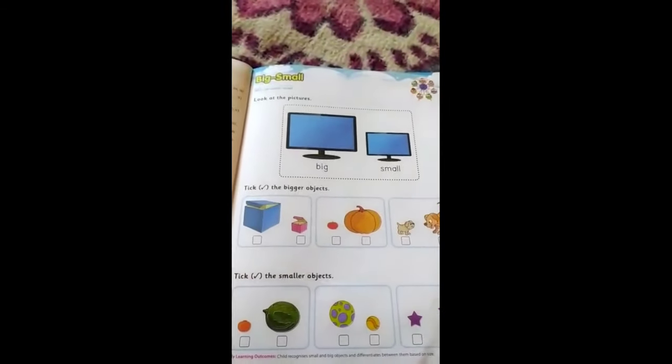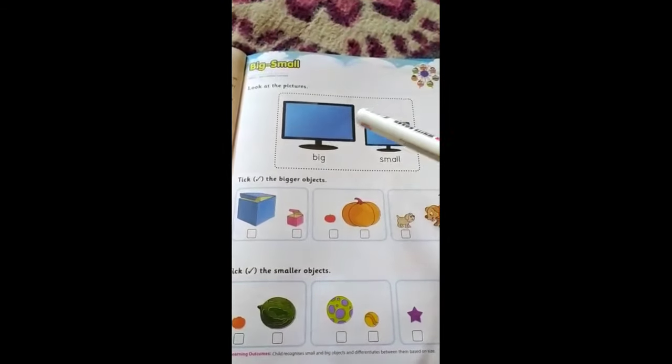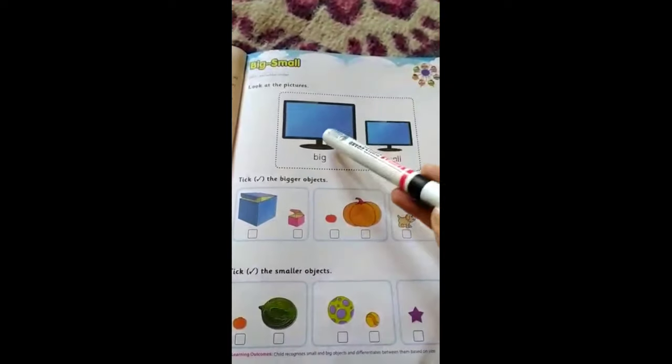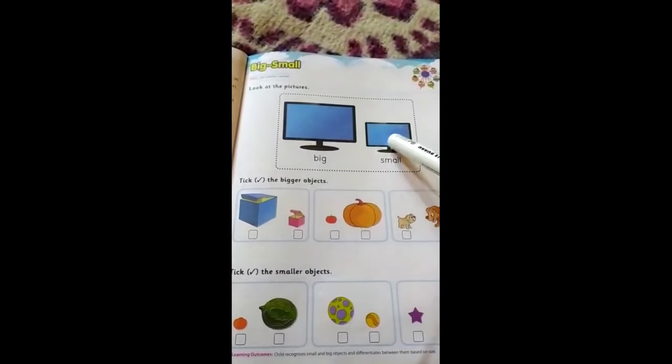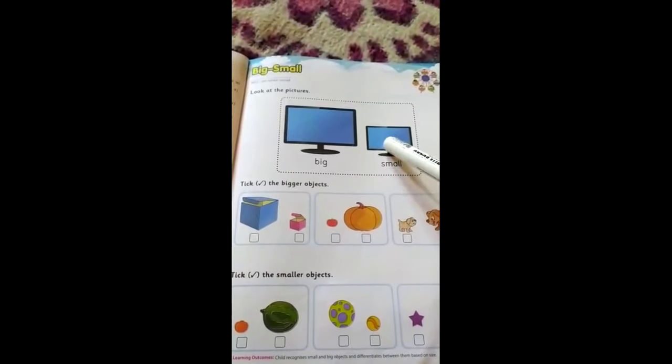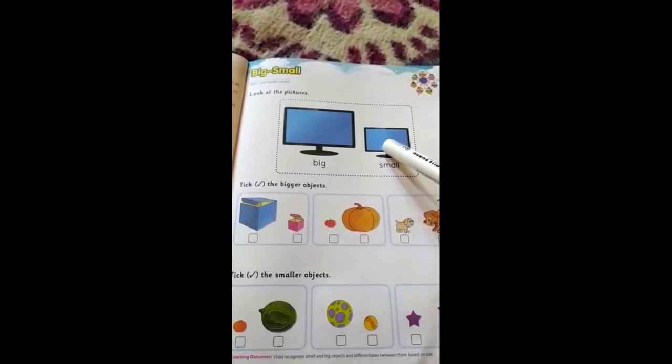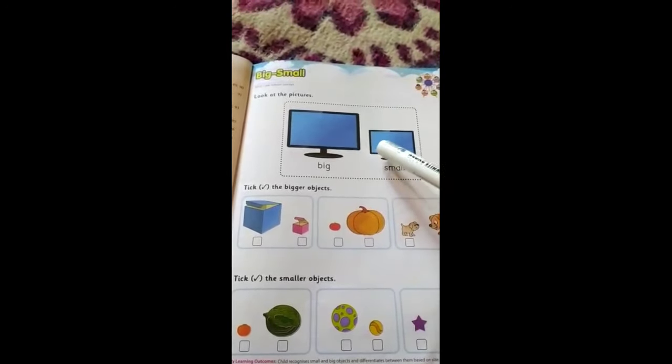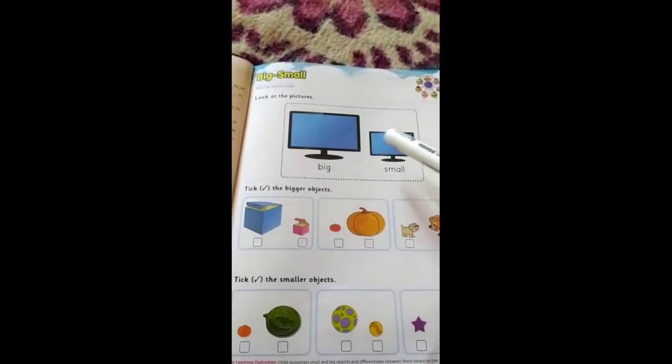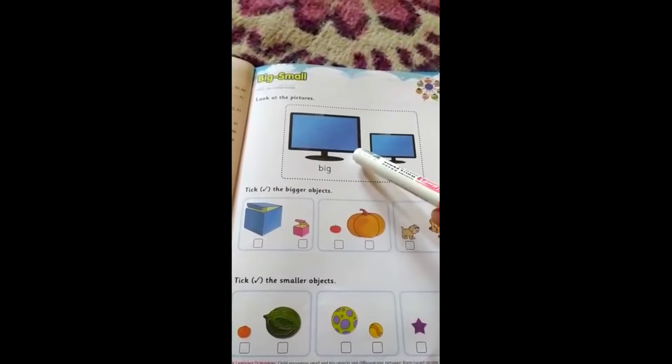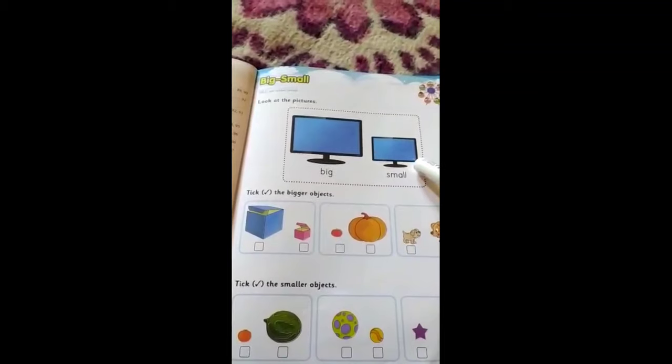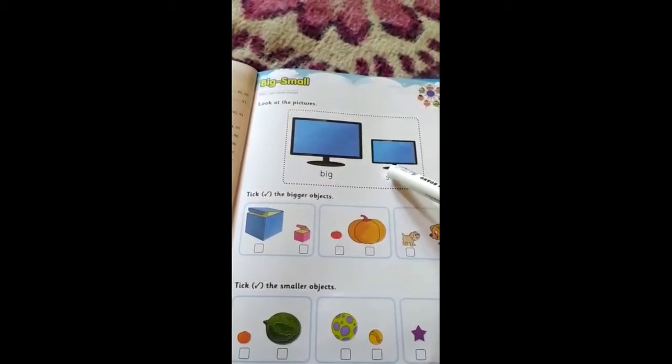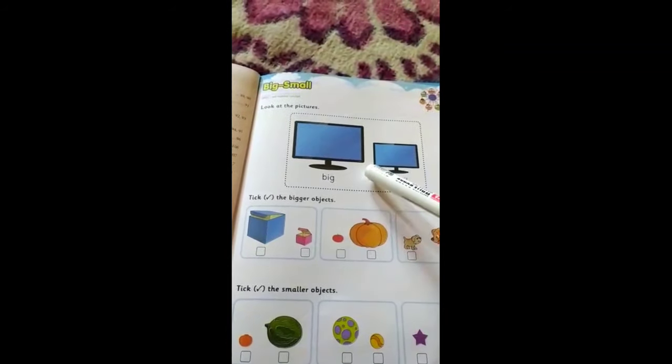First of all, look at these two pictures. These two monitors - are they of the same size? No, they are of different size. So we can say when we compare objects based on their sizes, we get big and small.